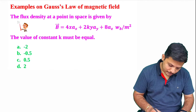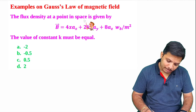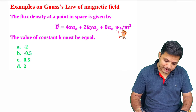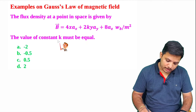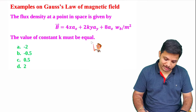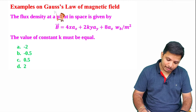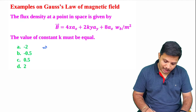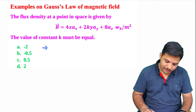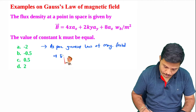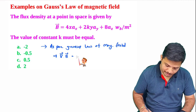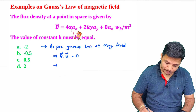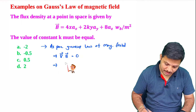The first question: the flux density at a point in space is given by B equals this expression. The value of the constant must be equal to how much? We will apply Gauss's law for magnetic field, where del dot B — meaning divergence of the magnetic field — equals zero. So the divergence of this expression equals zero.